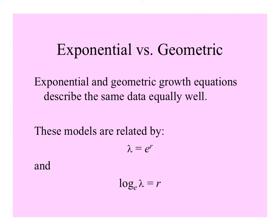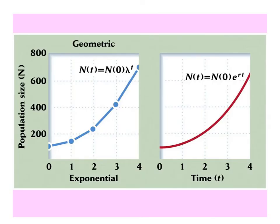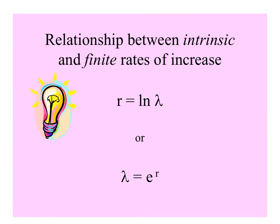Both models describe the same data equally well. They're related because lambda equals e to the r power, and the natural log of lambda equals r. Looking at graphs of these two functions over time, geometric growth by intervals follows what looks like an exponential model — the smoother curve for continuous population growth. So to summarize: little r equals the natural log of lambda, and lambda equals e to the power of little r, the intrinsic rate of increase.